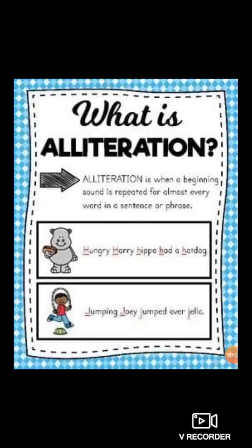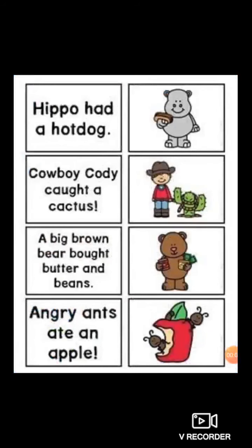Alliteration means when a similar first letter or sound is repeated for almost every word in a sentence or phrase. For example: 'Hippo had a hot dog.' Here the letter H is repeated — Hippo, had, hot dog — so it's known as alliteration.